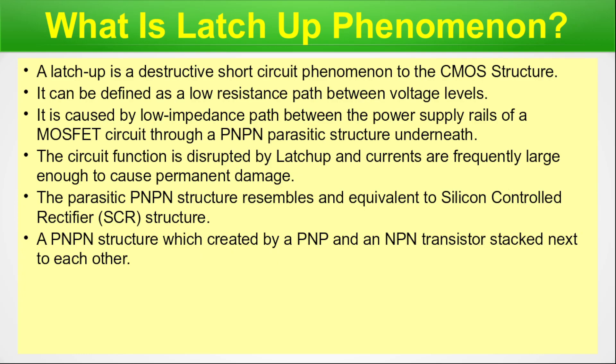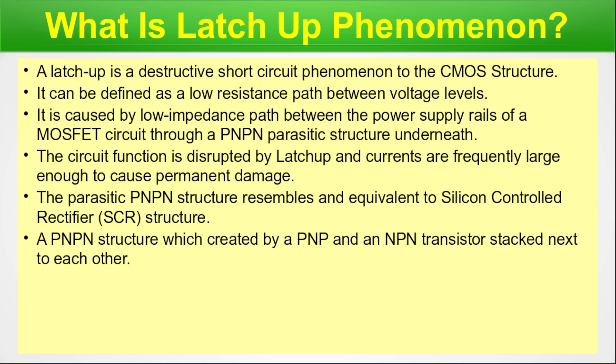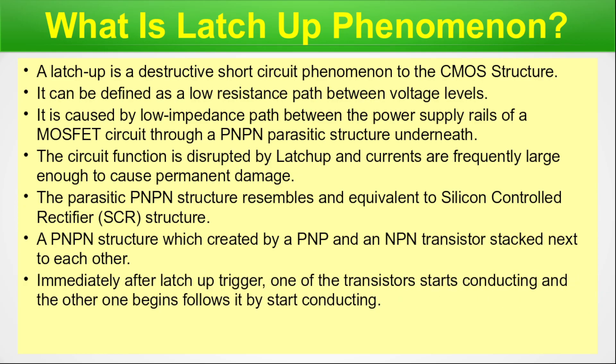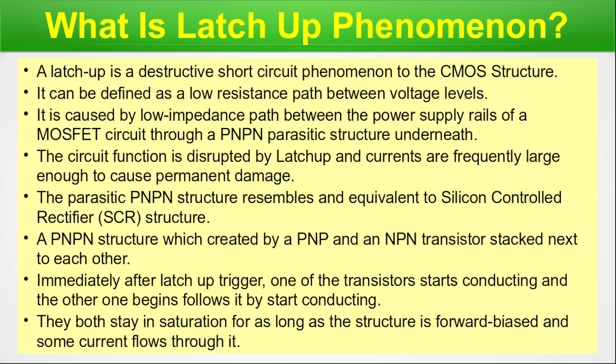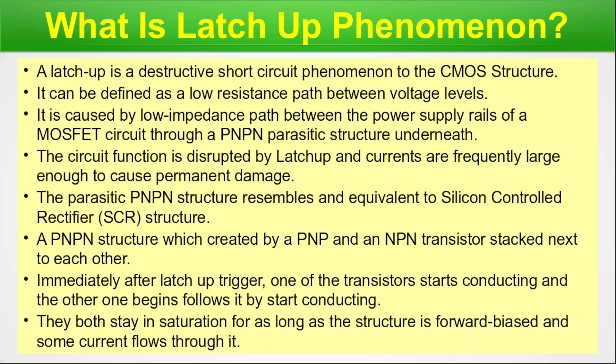The parasitic PNPN structure resembles an equivalent to the silicon-controlled rectifier, abbreviated as SCR — a PNPN structure created by a PNP and NPN transistor stacked next to each other. These are bipolar transistors, unlike the MOSFET which is a unipolar transistor. Immediately after latch-up is triggered, one transistor starts conducting and the other begins to follow. They both stay in saturation as long as the structure is forward biased and current flows through it, due to positive feedback in the PNPN structure.